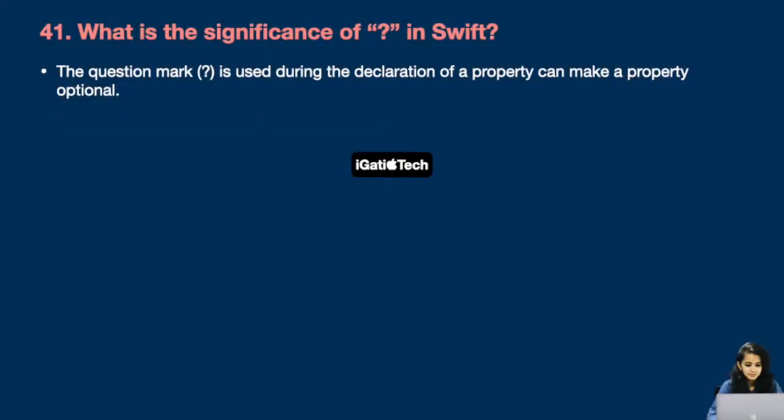Next: what is the significance of the question mark in Swift? The question mark is used during the declaration of a property to make it optional. These are various ways by which this question is asked in interviews.